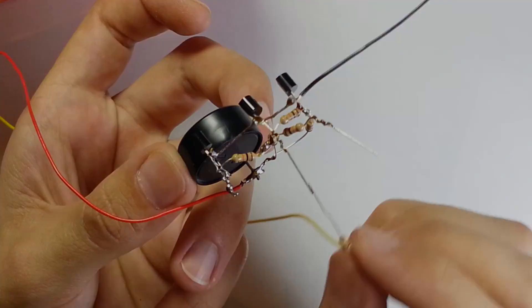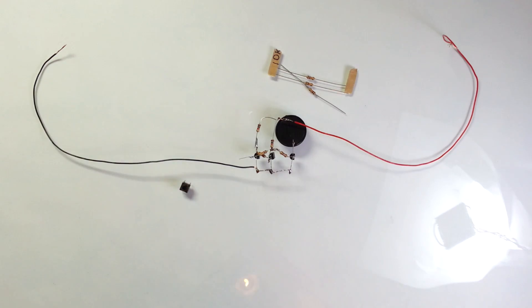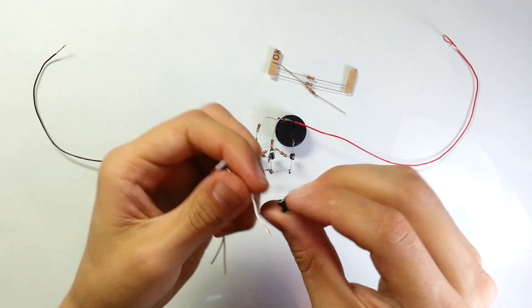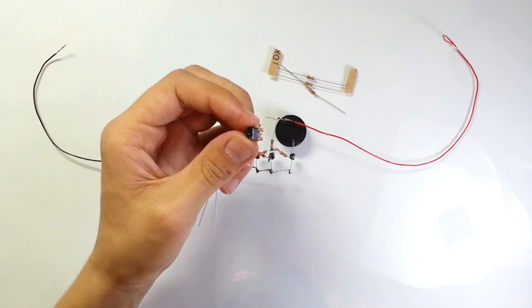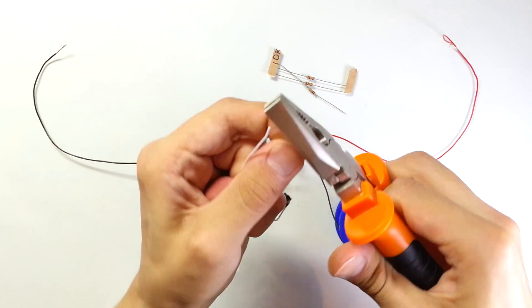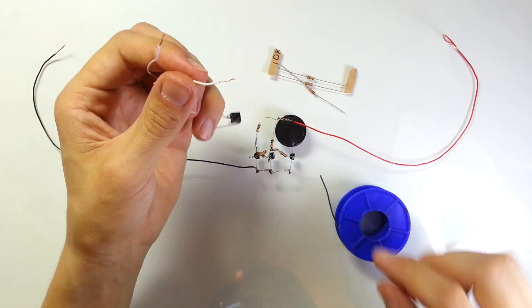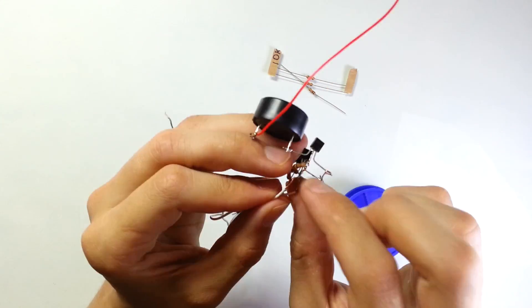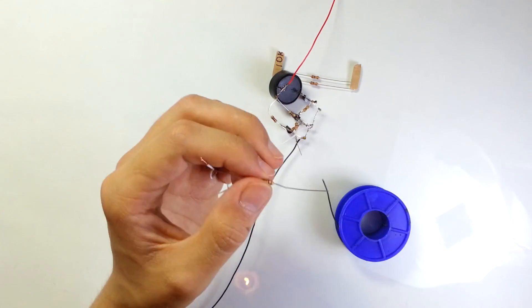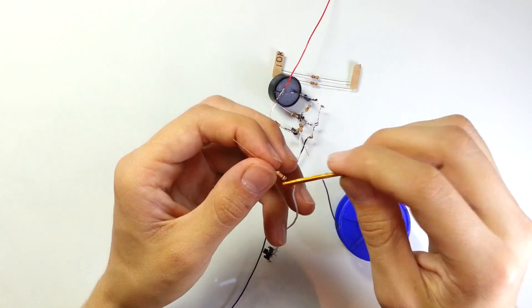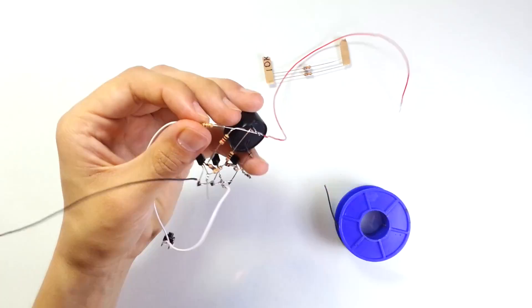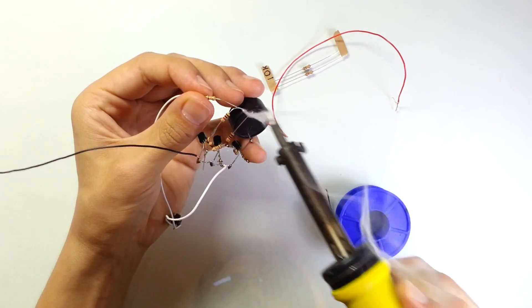Now let's solder the button to the wires. After that, let's solder the first wire to the base lead of transistor Q3, and let's solder the second wire to the 10 kOhm resistor. After that, the 10 kOhm resistor should be soldered to the positive red wire.